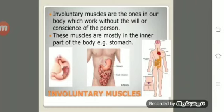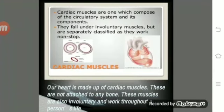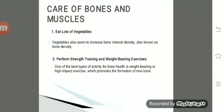Involuntary muscles are not under your control — they work without the will of the person and are mostly in the inner part of the body, such as the stomach. You don't tell your stomach to digest food; it does it itself. Cardiac muscles compose the circulatory system and fall under involuntary muscles, but they are separately classified because they work non-stop throughout a person's life.